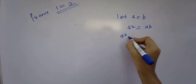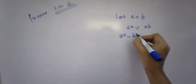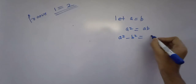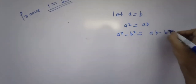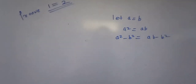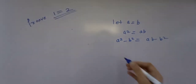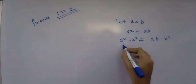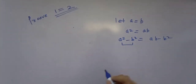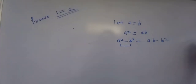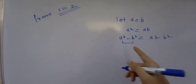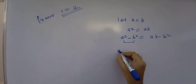So it's a squared minus b squared equals ab minus b squared. Now take this identity — we know that a squared minus b squared equals (a plus b)(a minus b).